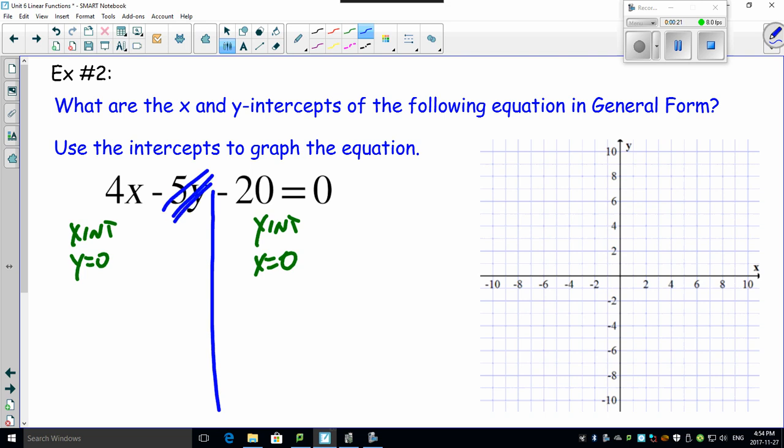...guy's just gone, leaving you with 4x minus 20 equals zero. Bring the 20 over, 4x equals 20. Divide by 4, x equals 5. There's your first point: 5 comma 0, right there.